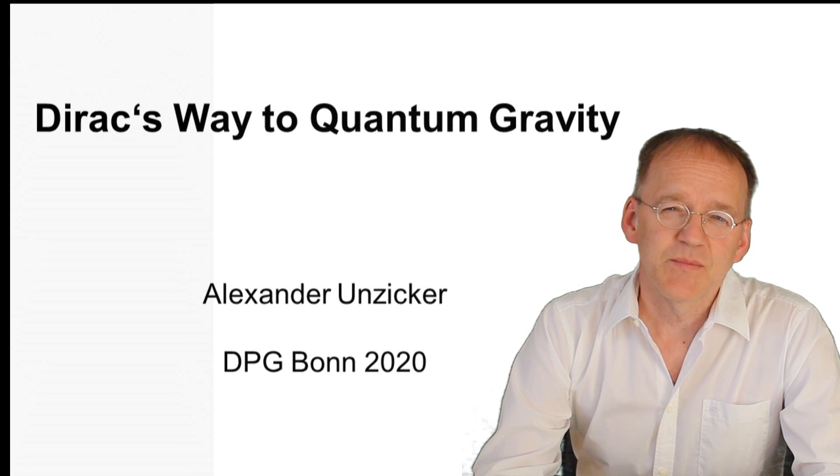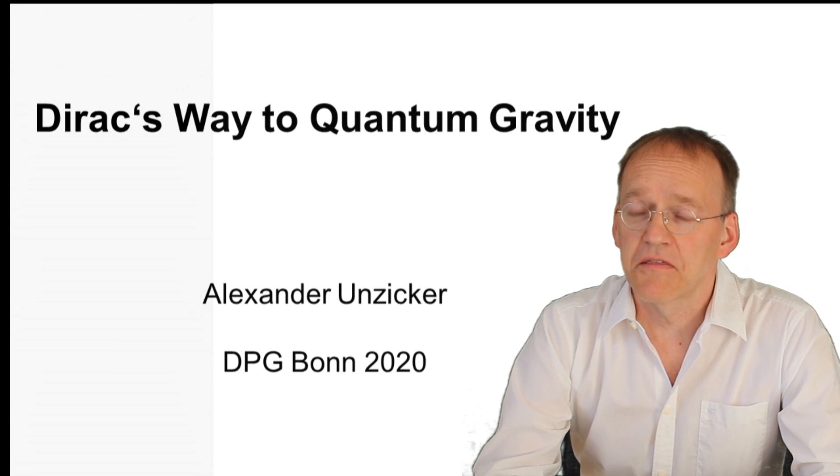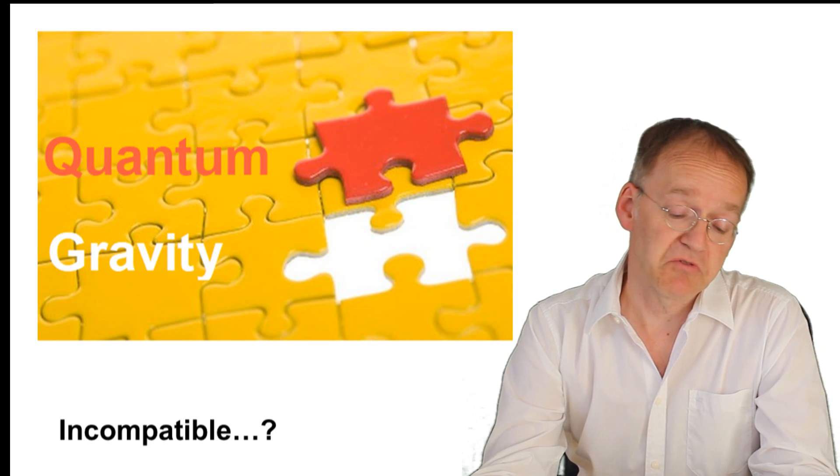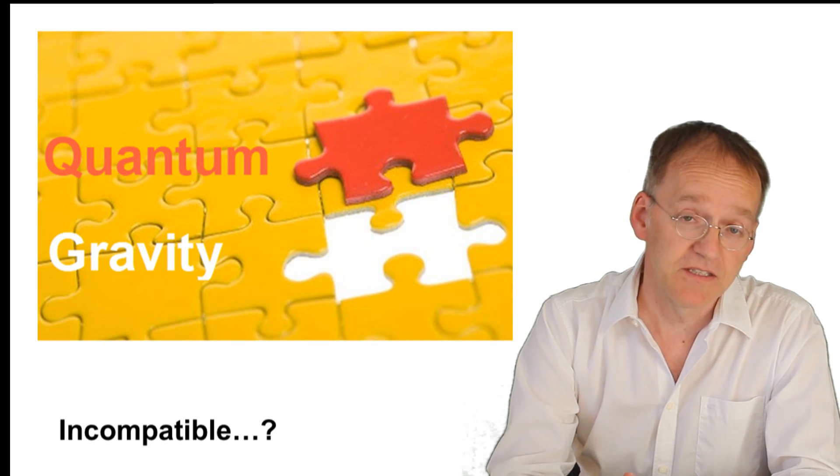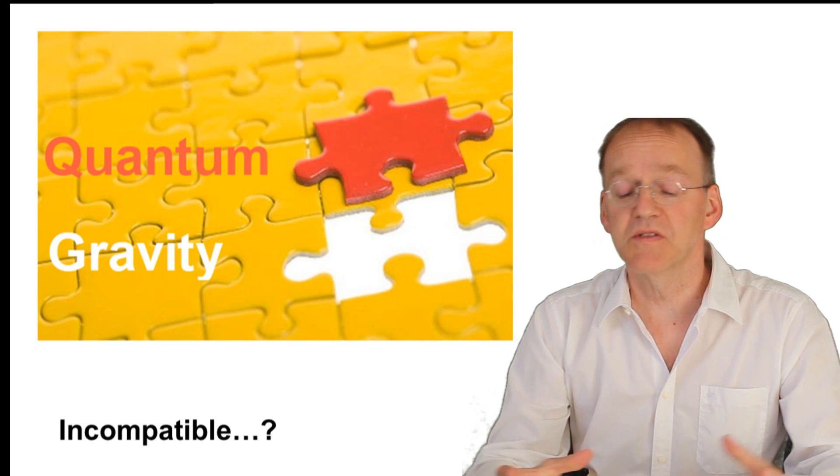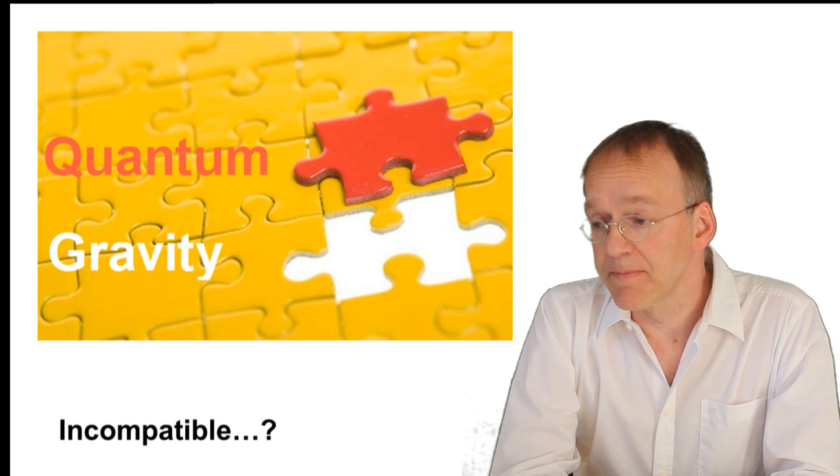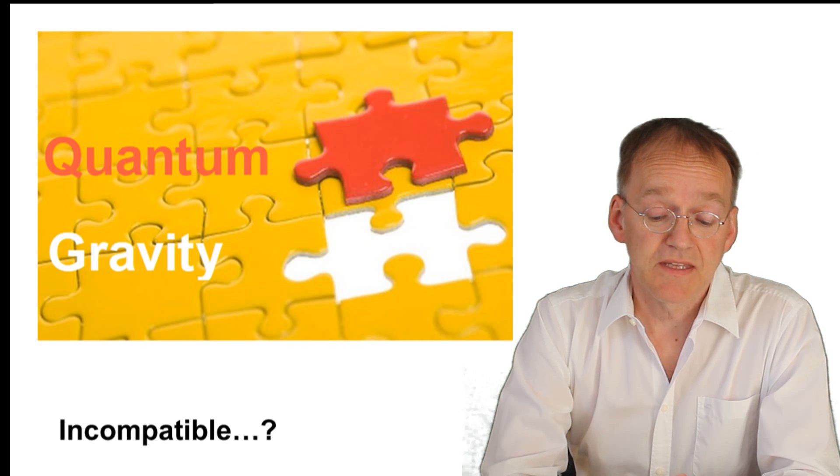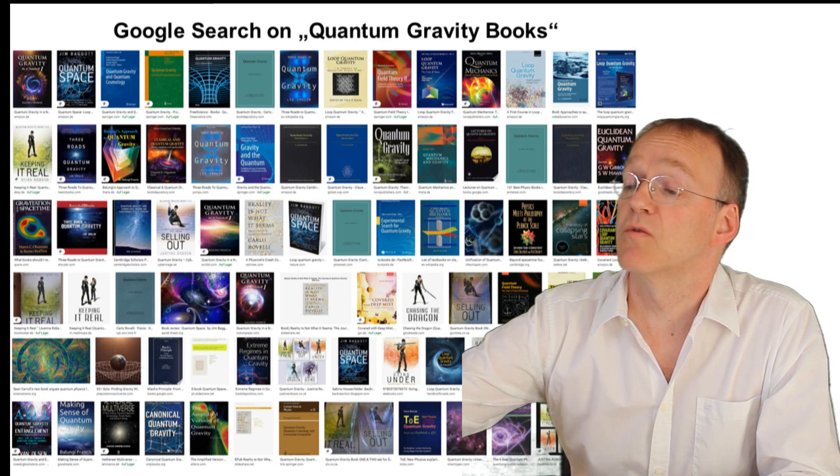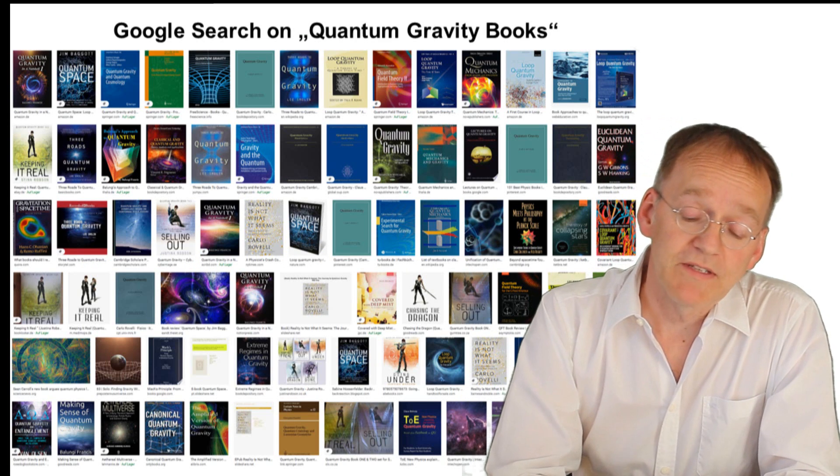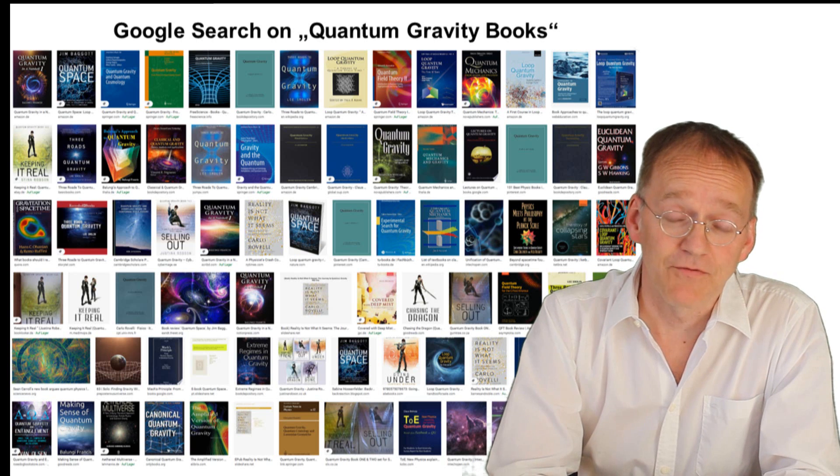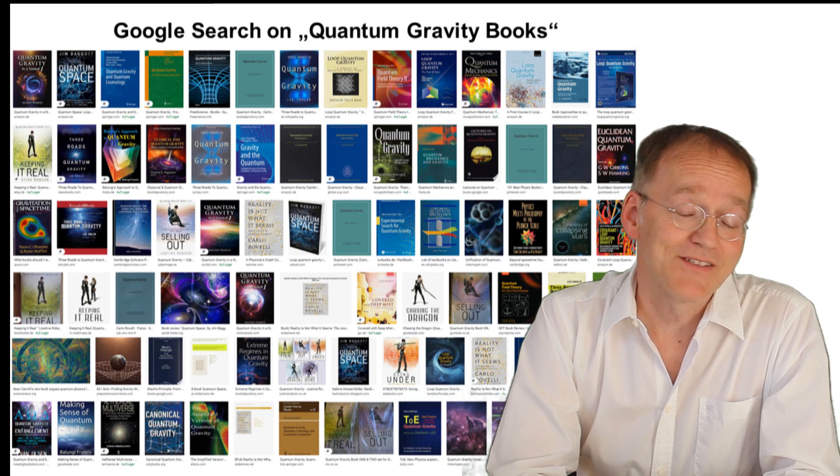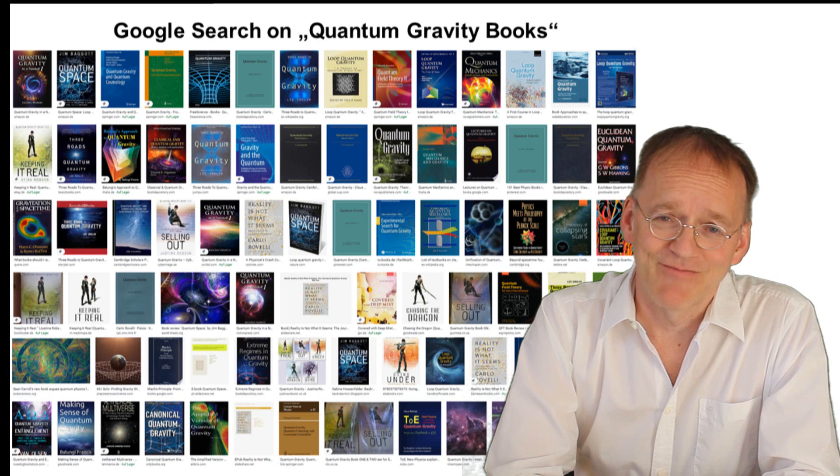Well, quantum gravity seems ambitious to talk about because if you ask any physicist what's the biggest problem of physics, he would answer: to unify relativity and quantum theory, the two most important theories, the two columns of theoretical physics. It seems very ambitious, but it seems that a lot has been achieved. If you do a Google search for books on quantum gravity, you obtain impressive results. It's tempting to assume that if so many people write about quantum gravity they must know what they're writing about.